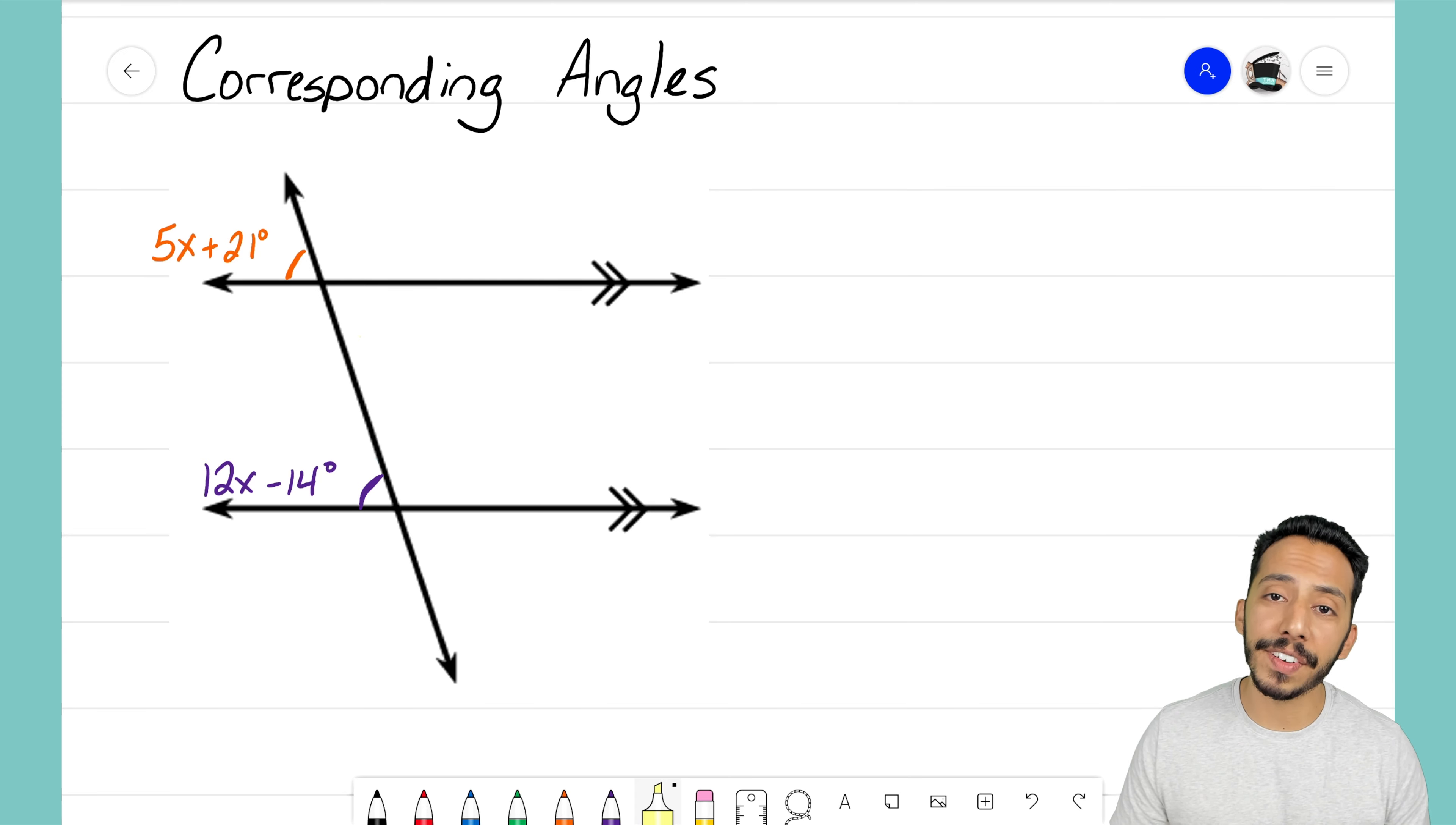Now notice the two angles that we have here, we have one in orange, and we have one in purple. That orange angle is 5x plus 21 degrees, and the purple angle is 12x minus 14 degrees.